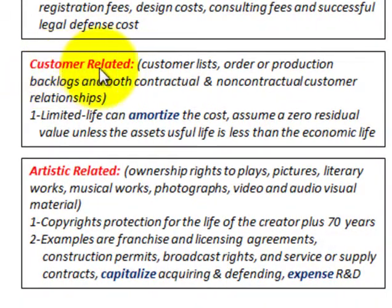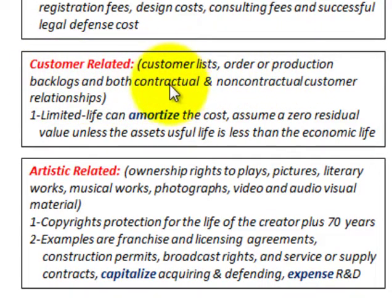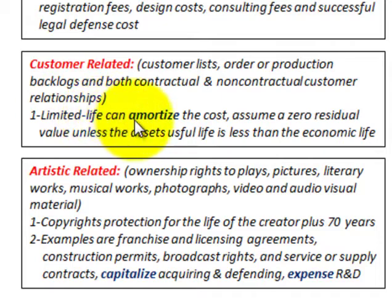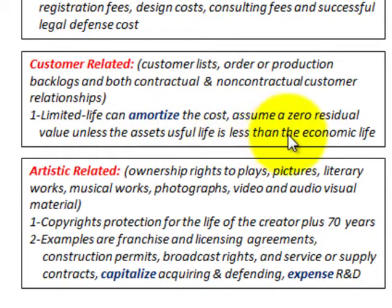Number two: customer-related intangibles. Those would be customer lists, order or production backlogs, and both contractual and non-contractual customer relationships. Number one, they have a limited life and you can amortize the cost, assuming a zero residual value unless the asset's useful life is less than the economic life.